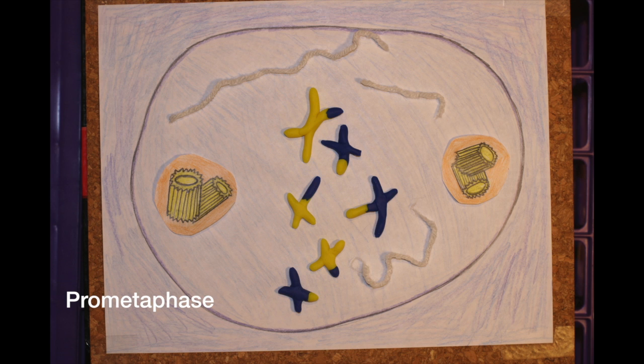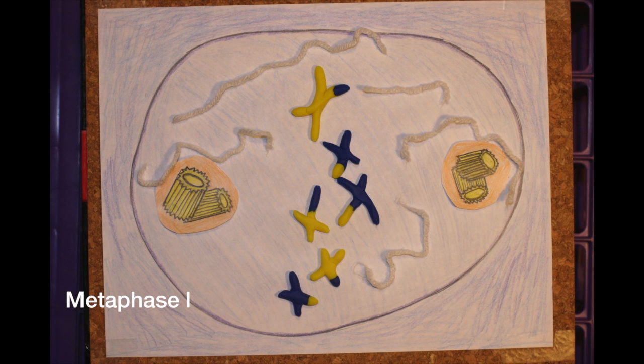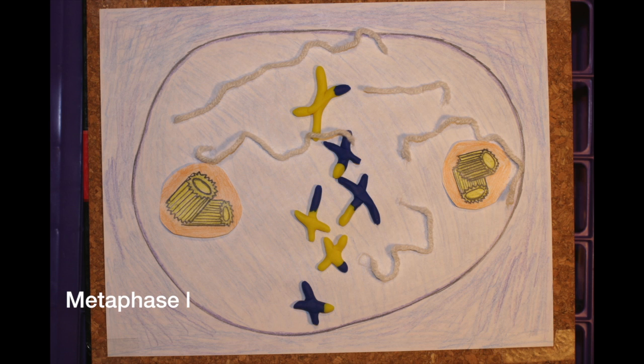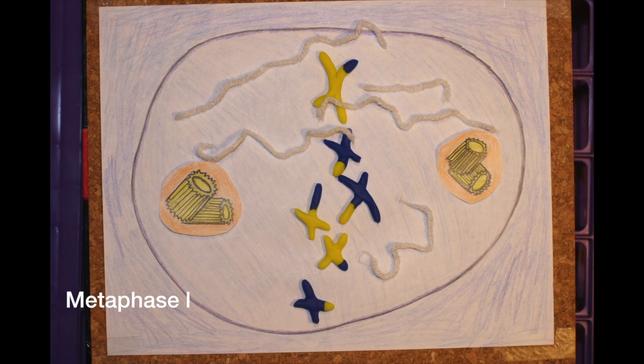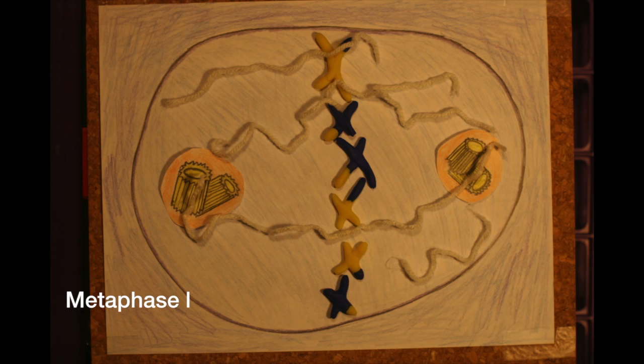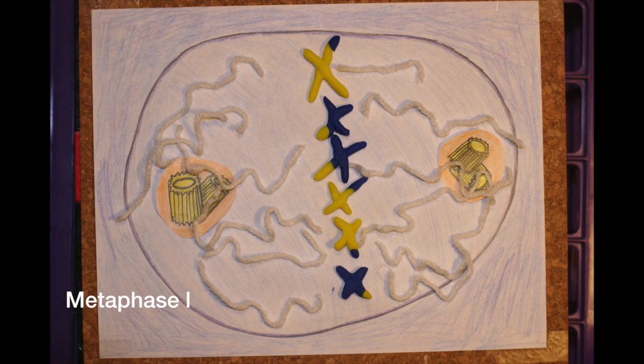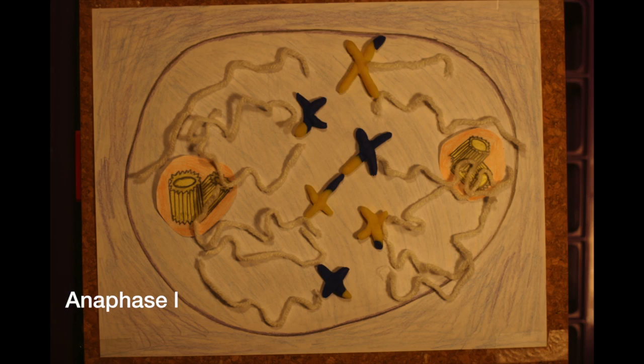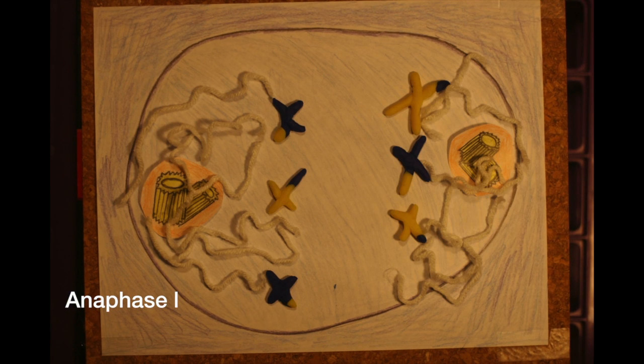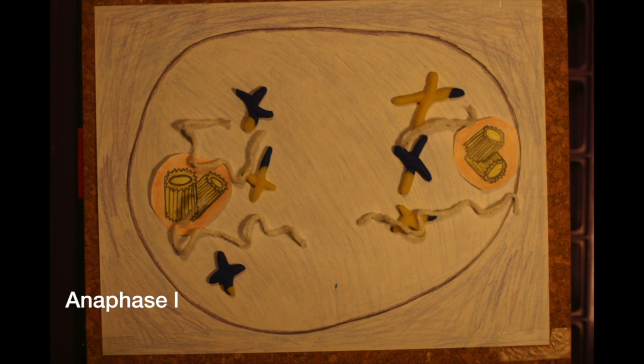Now the cell can move onto metaphase one, where homologous pairs line up on the equatorial plate of the cell. Here, independent assortment leads to genetic diversity through the random arrangement of pairs lined up. And anaphase one occurs. The centrosomes pull a random homologous chromosome to its respective side.